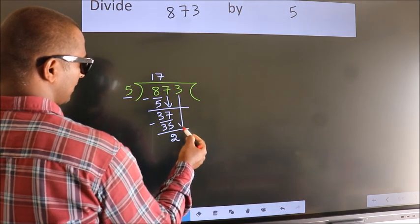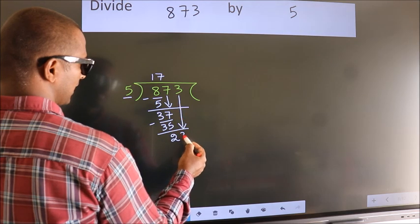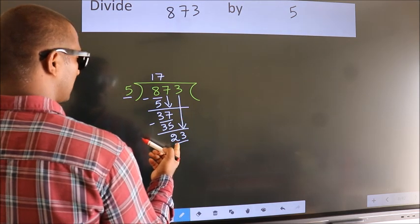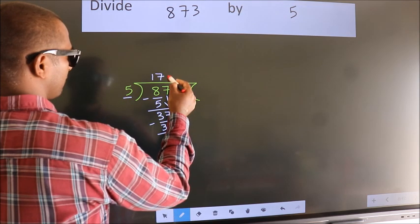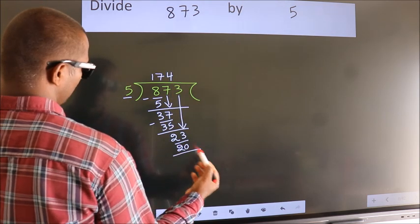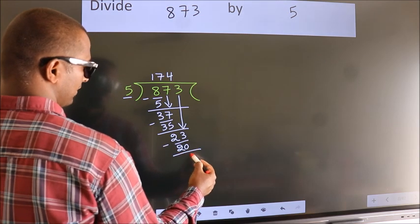After this, bring down the beside number. So 3 down, so 23. A number close to 23 in the 5 table is 5 fours 20. Now we subtract. We get 3.